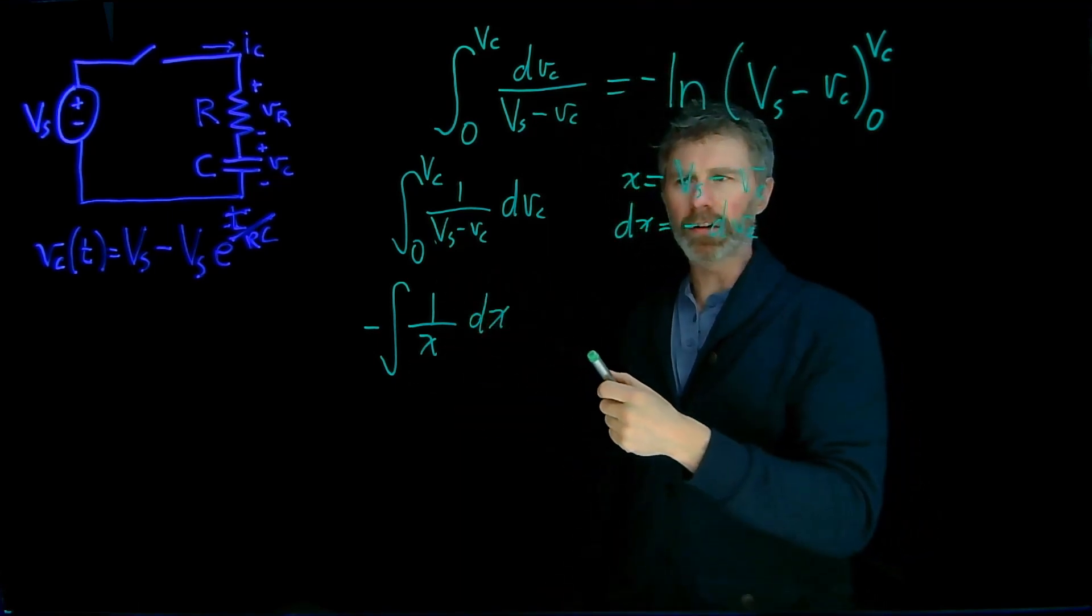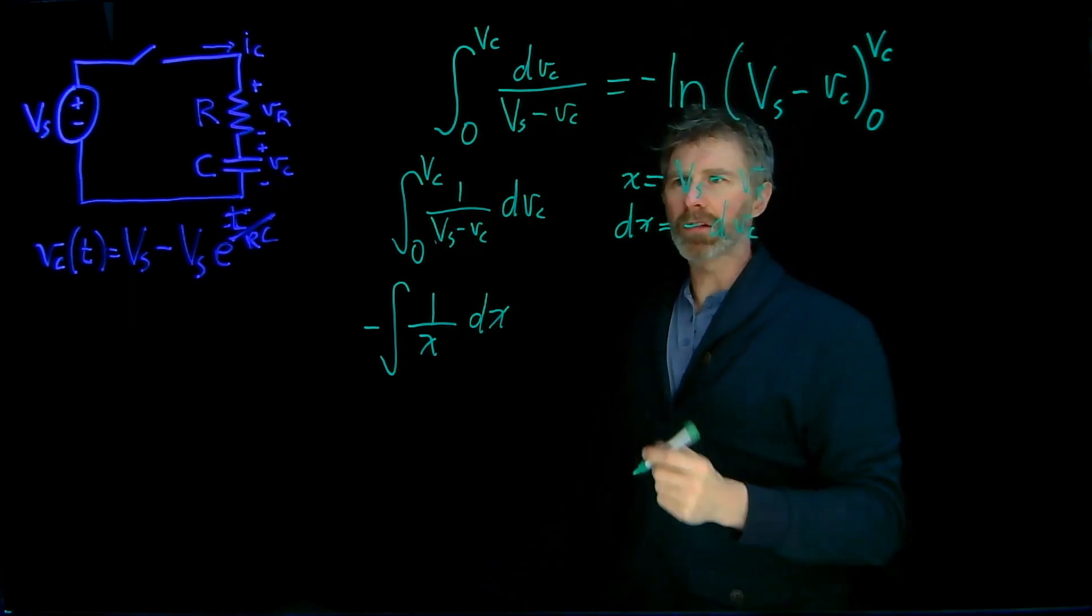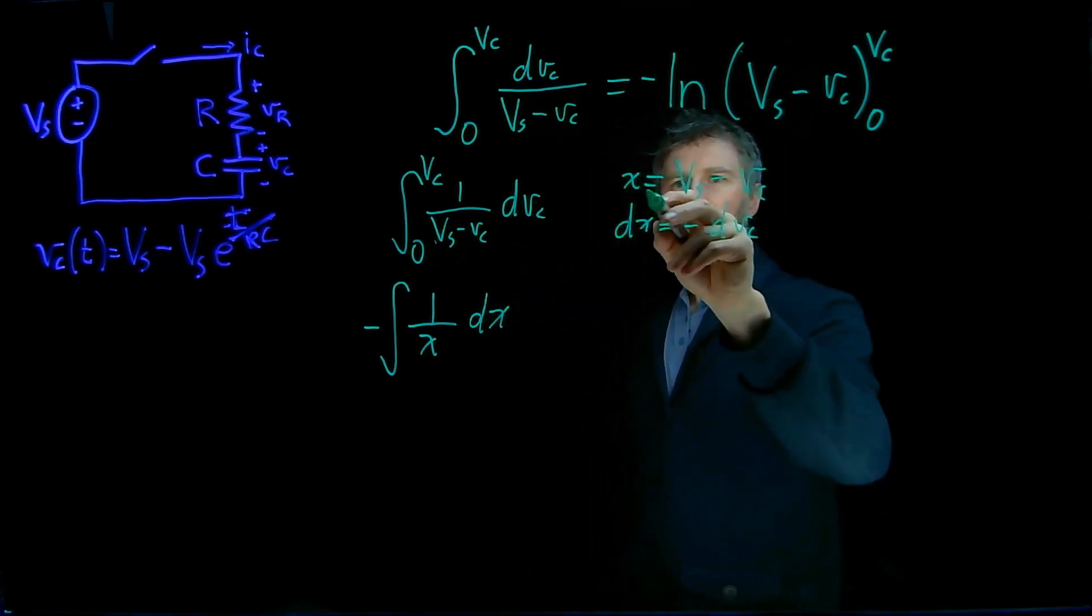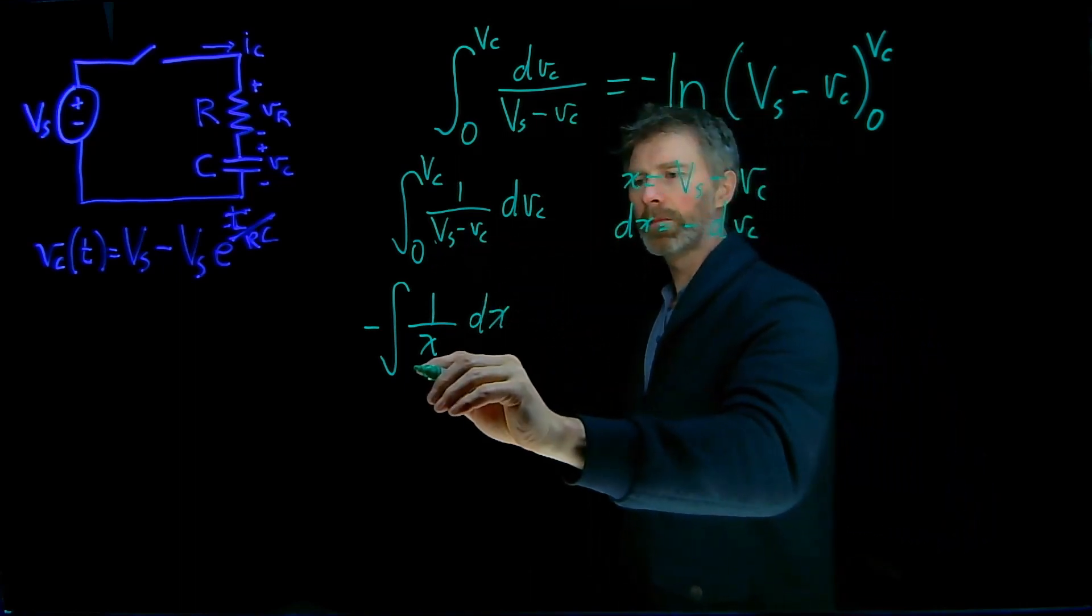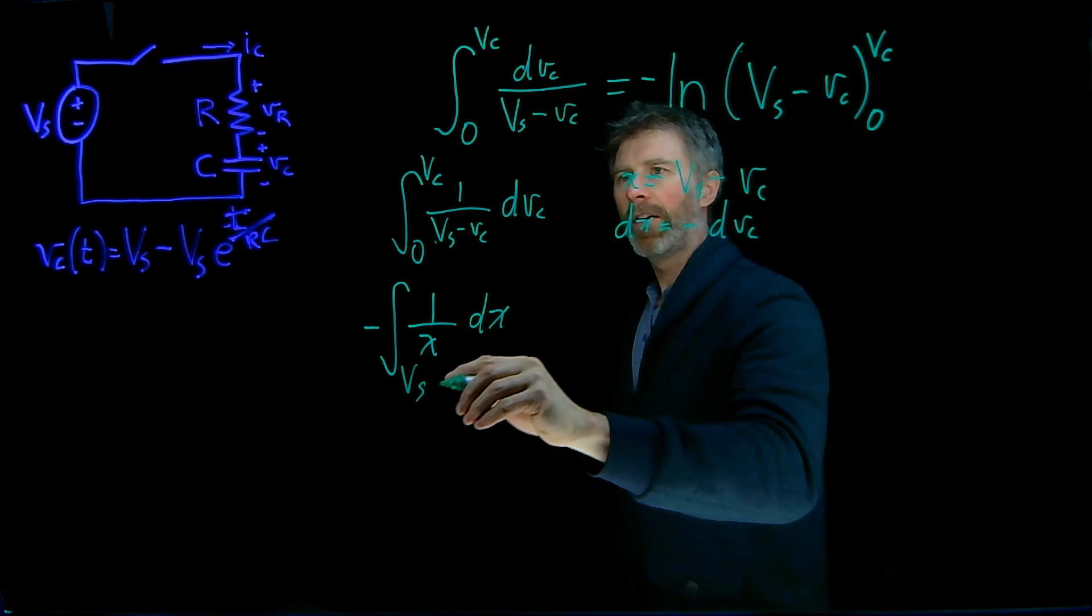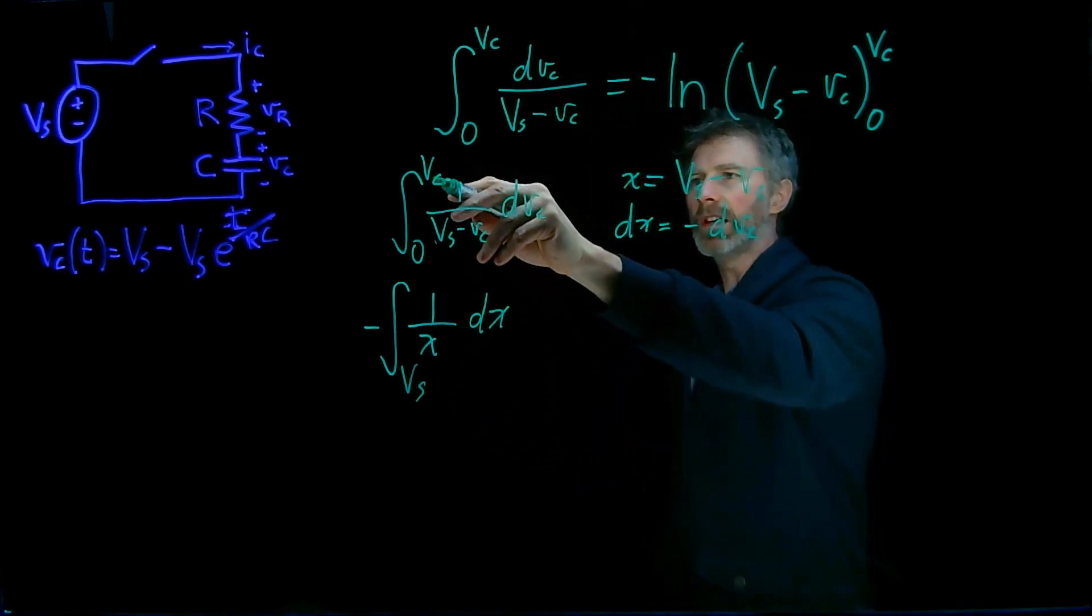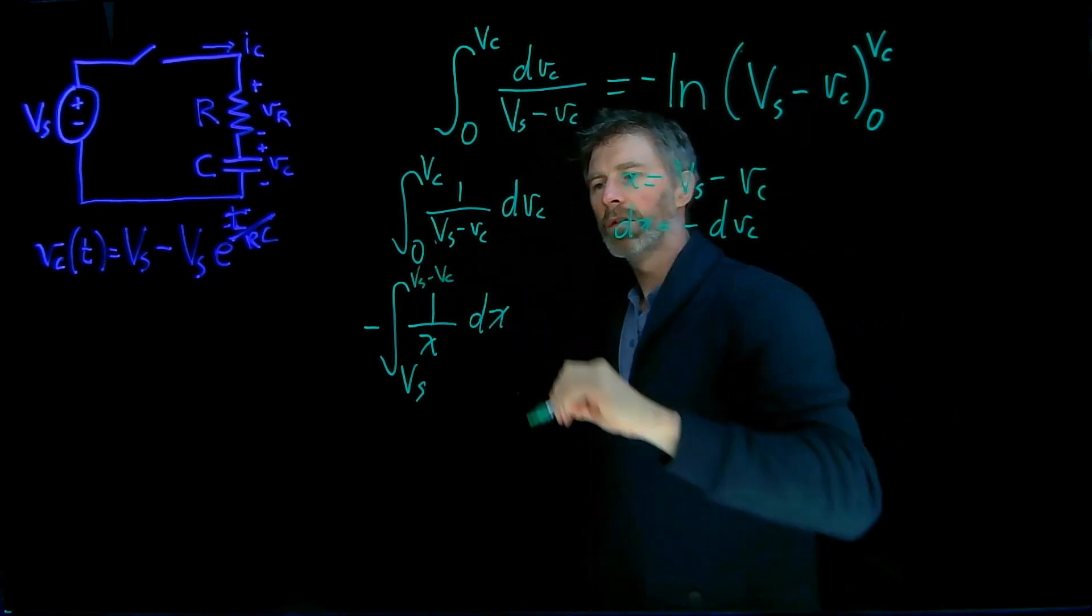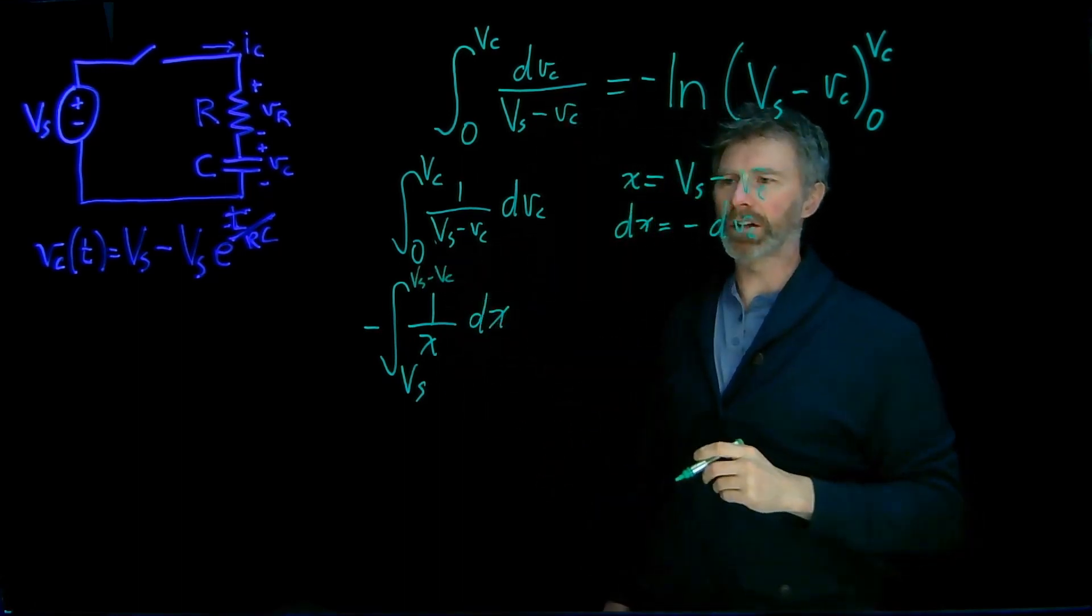and I'll show you what the substitution is here. It's actually not even necessary because I'm going to back substitute and get rid of it, but if Vc is 0, then x is going to be Vs, and if Vc is capital Vc, then x is going to be Vs minus Vc. So I'm integrating from Vs up to Vs minus Vc.